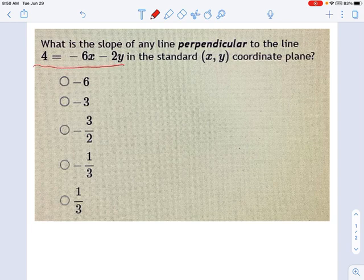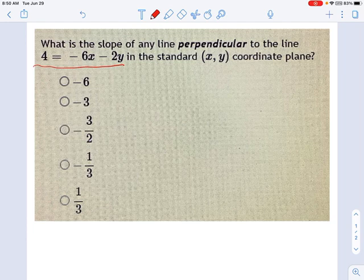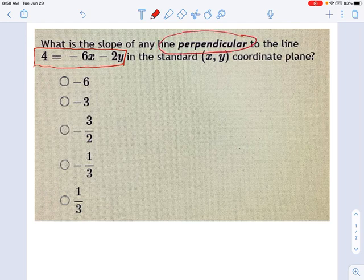What you have to realize is we're talking about two things. One thing is this line right here, 4 equals negative 6x minus 2y. And then the other thing we're talking about is this concept of perpendicularity. What does it mean to be perpendicular to a line? Well, we'll get to that in a second. Let's talk about this line here that we're given an equation for.